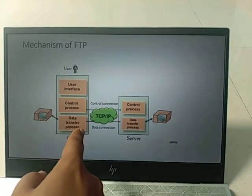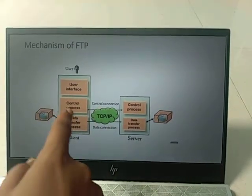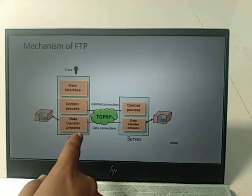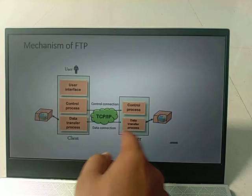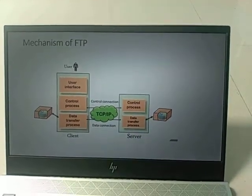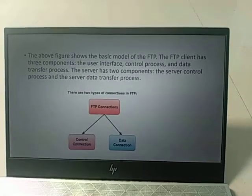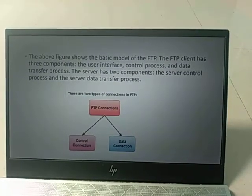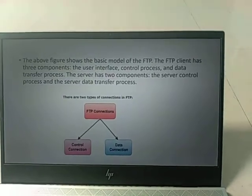Once the connection is established, the client can share data using the data transfer process. The data is sent to the server, where it is processed and stored. FTP has two types of connections: the control connection and the data connection.